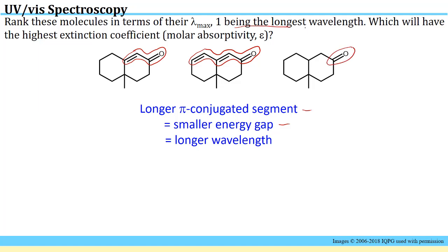If one is the longest wavelength, the longest wavelength is the smallest energy and that corresponds to the longest pi conjugated system. This is one, and this is the second longest pi conjugated system, and this is the shortest pi conjugated system which has the highest energy and the lowest wavelength.